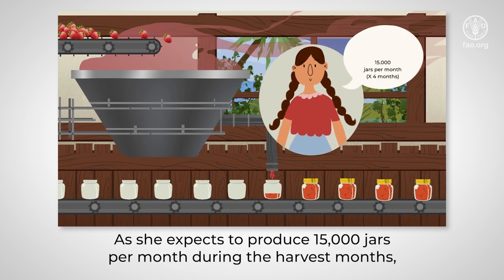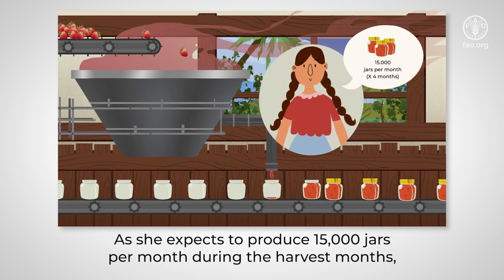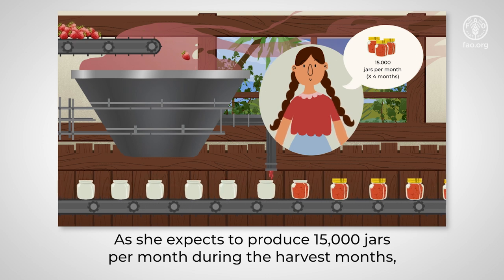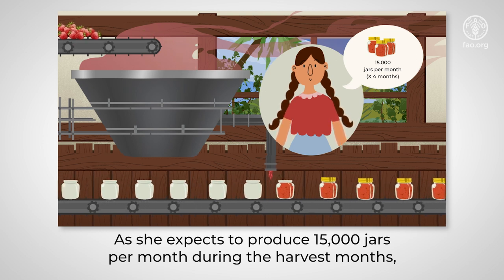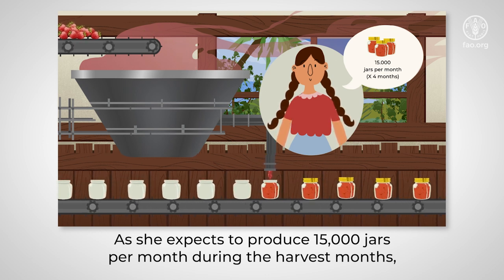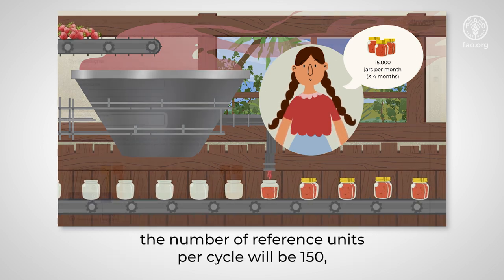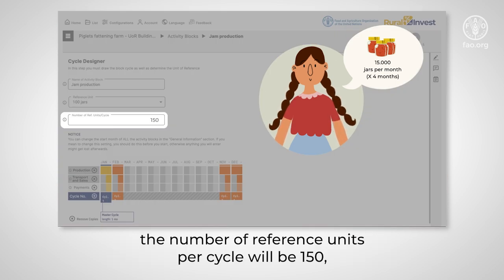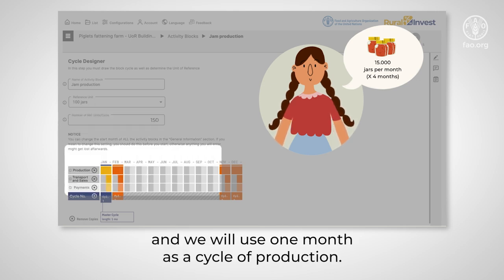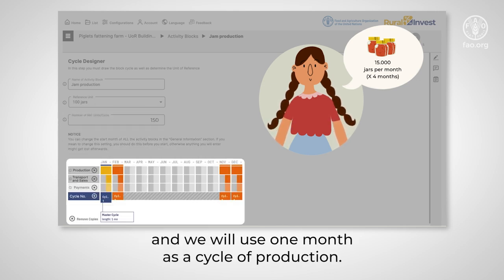As she expects to produce 15,000 jars per month during the harvest months, the number of reference units per cycle will be 150, and we will use one month as a cycle of production.